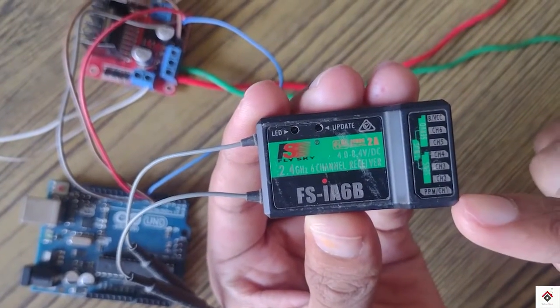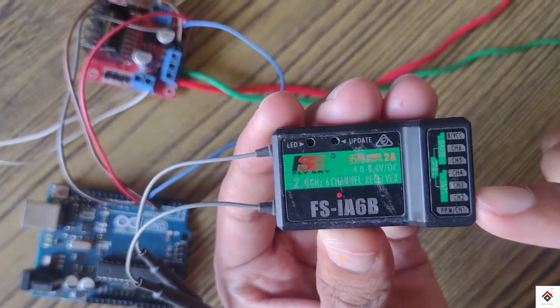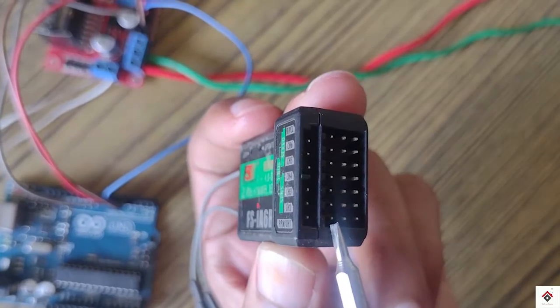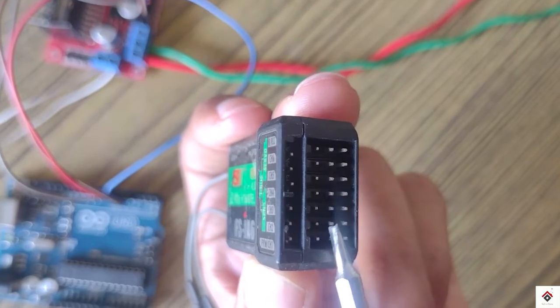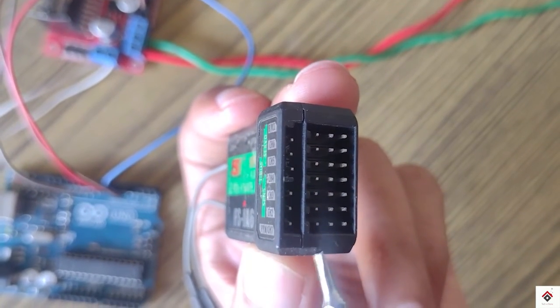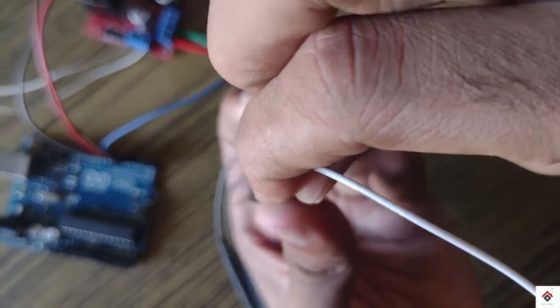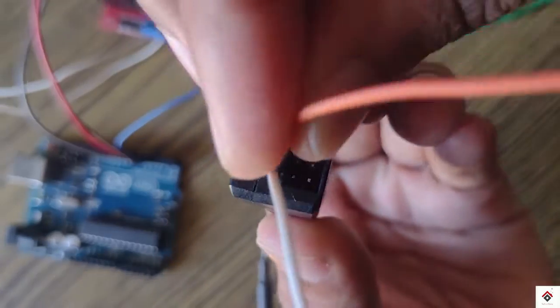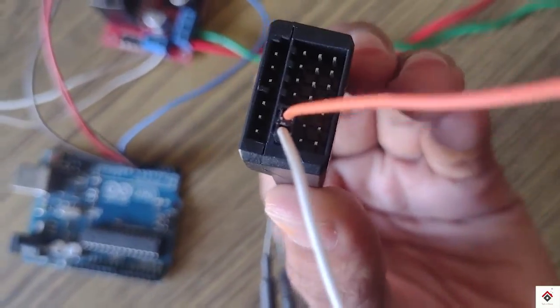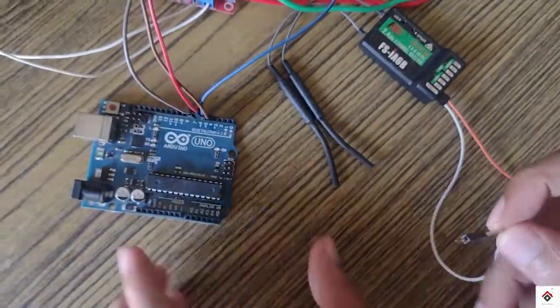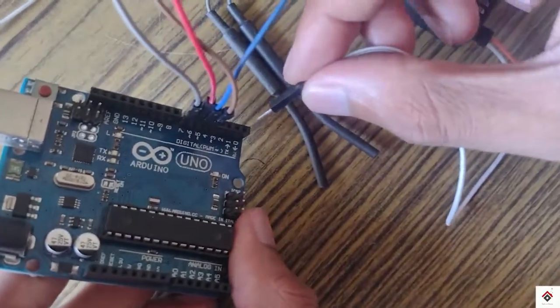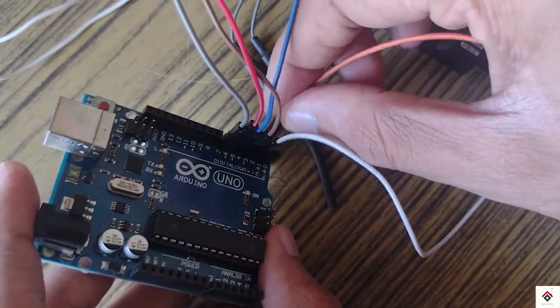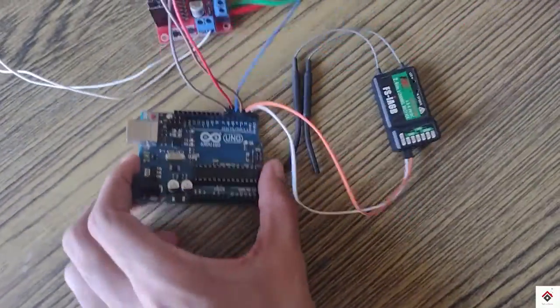From the receiver we'll be making use of channel one and two. So we'll be connecting only the signal pins of both the channels which are at the top. Now the signal pin from channel one goes to Arduino digital pin two and channel two signal pin goes to digital pin three.